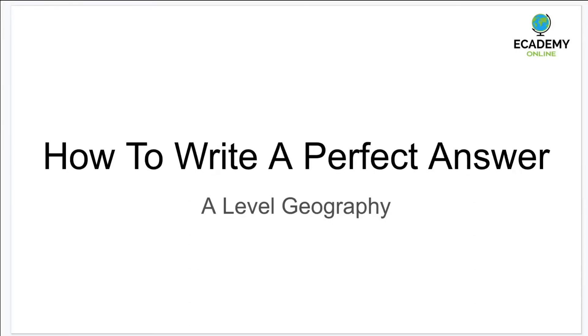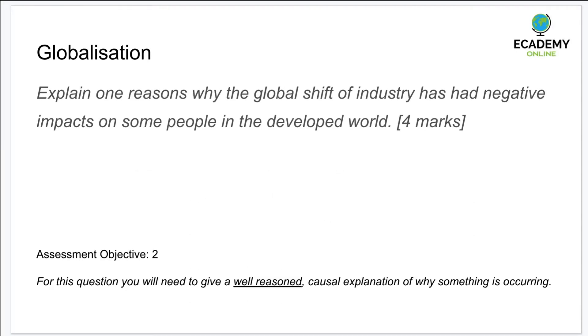How to write a perfect A-level geography answer. Today we're going to look at globalization, specifically the question: 'Explain one reason why global shift of industry has had a negative impact on people in the developed world.'